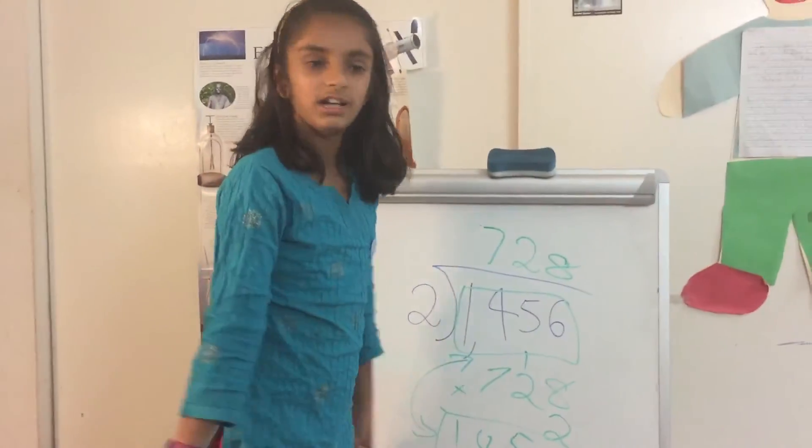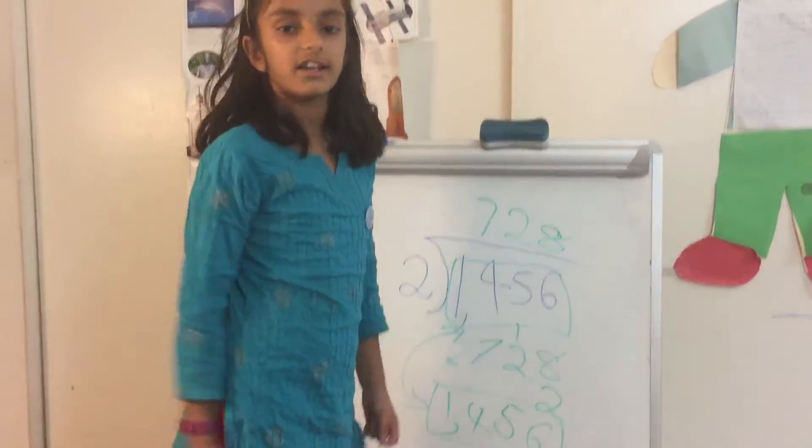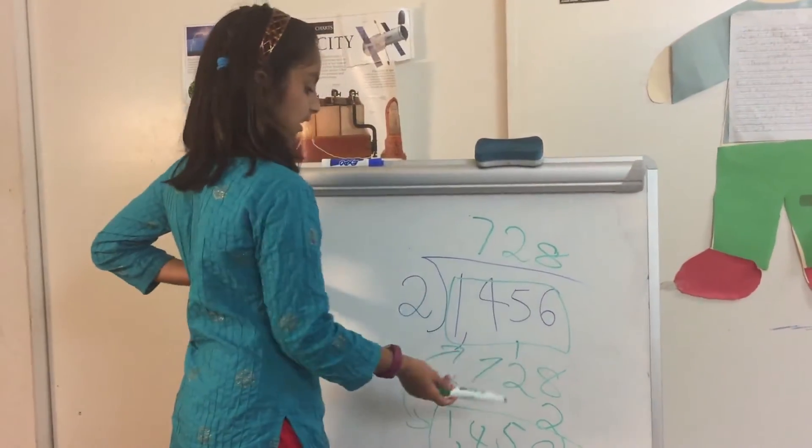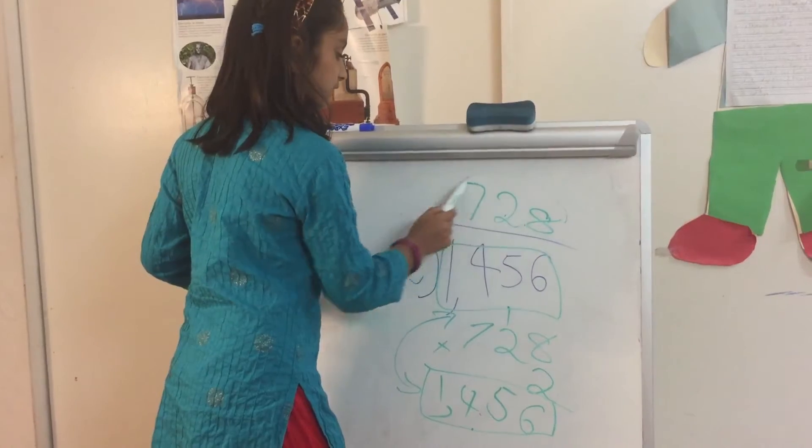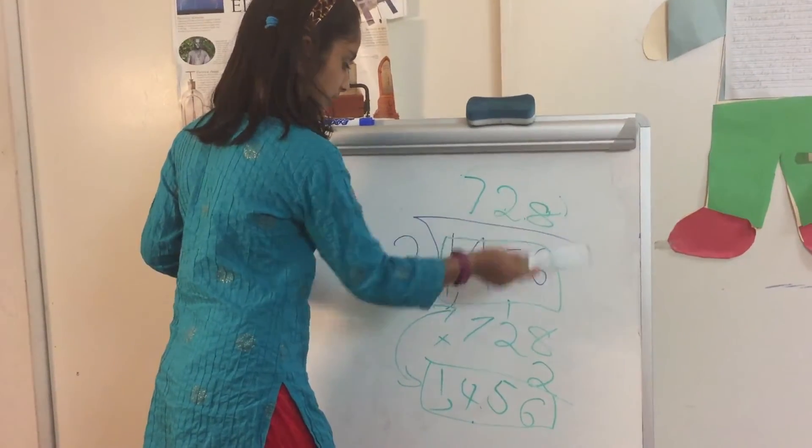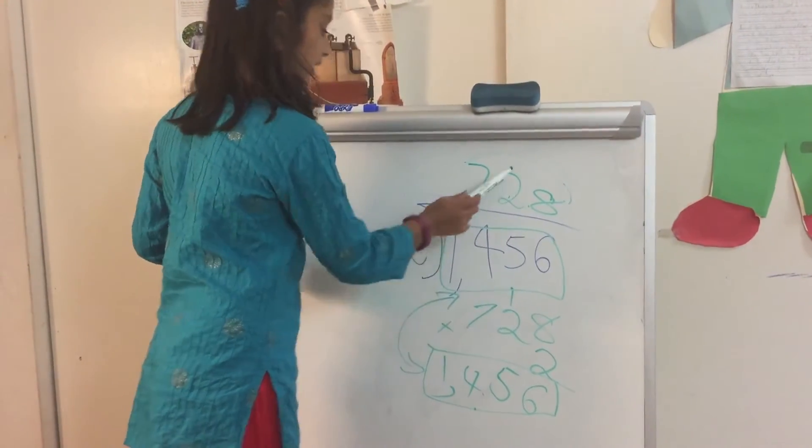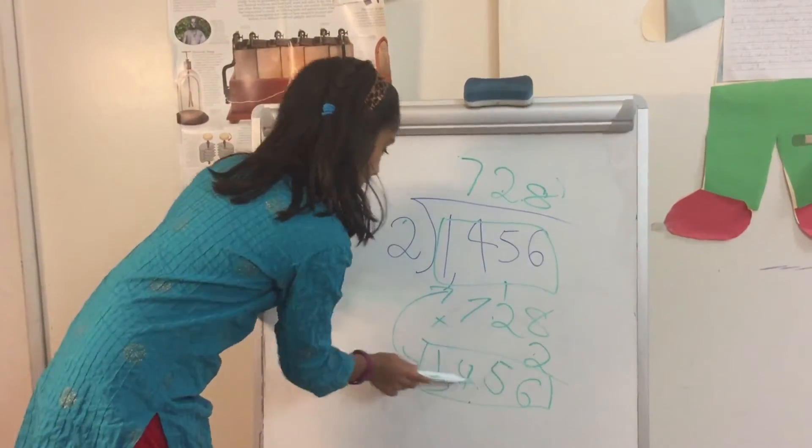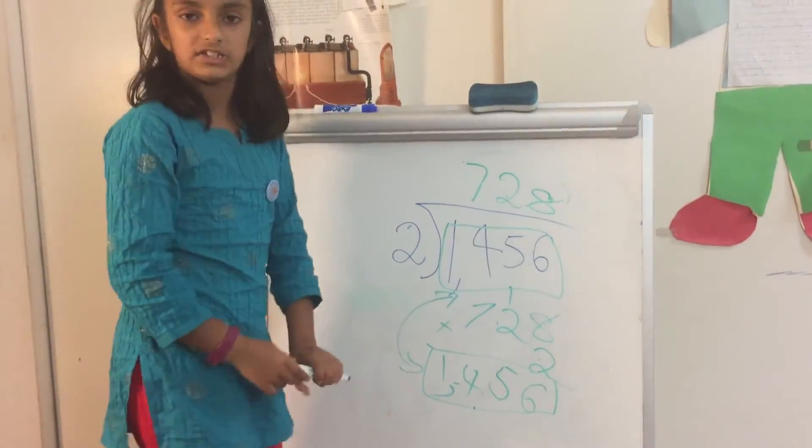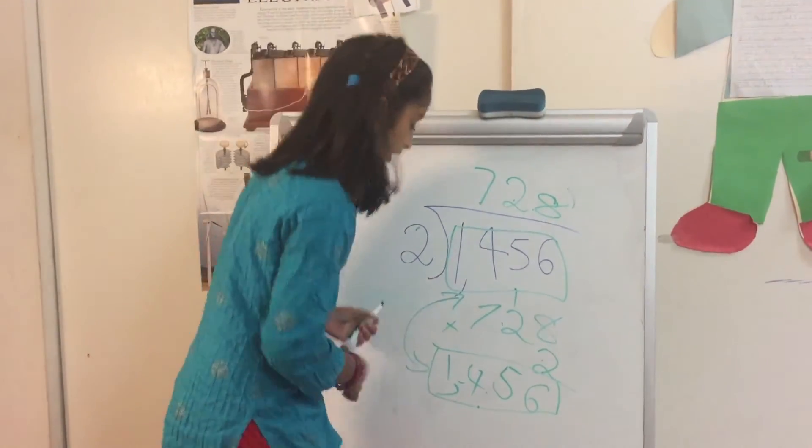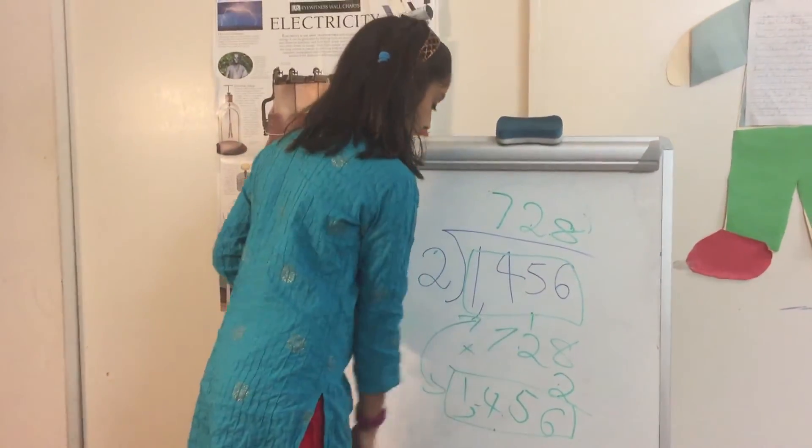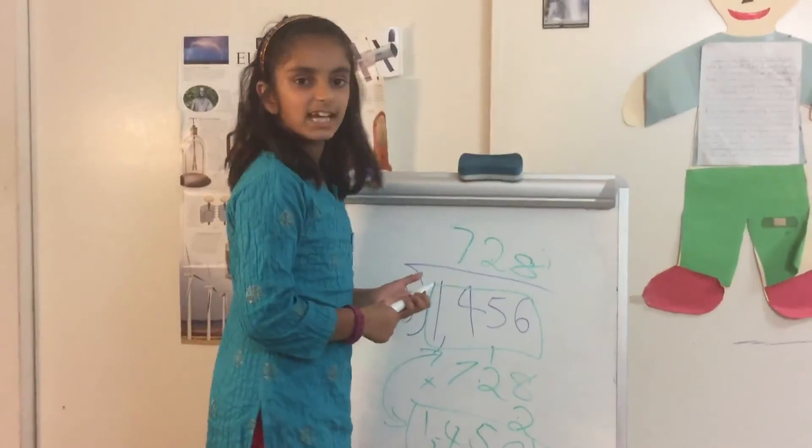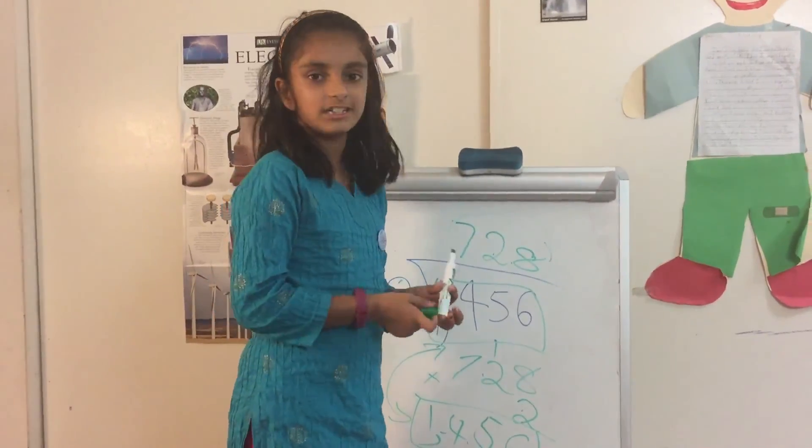So yeah, that's a way to check your answer. We got it correct because the answers were the same. So as you'll see, we use the same digits to check. 728 times two equals 1,456. And then we got the same answer. So that's a good way also to check your work. We got it correct because we got the same answers for both of them. So thanks guys for watching. Hope your division came out good. Bye.